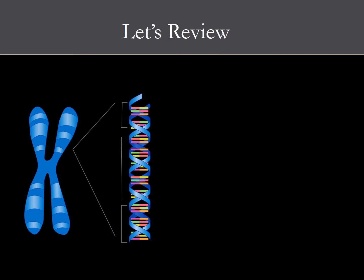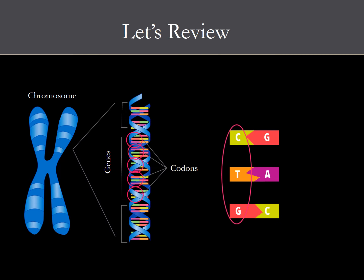Let's review going from larger units to smaller units. Chromosomes are made up of smaller units called genes. Genes are made up of smaller units called codons. Codons are made up of three individual nucleotide bases.